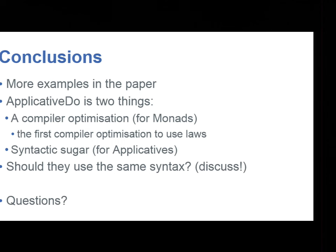So in conclusion, you can see more examples in the paper. There's one interesting question that comes up, which people often raise when I describe this. Applicative do is really two things. We've got some kind of syntactic sugar which applies to applicatives, but we've also got this interesting analysis that's trying to do something that looks like optimization on things that are applicative and monad. So it's both a compiler optimization and a syntactic sugar. And we're using the same syntax for both of those things. So there's a discussion to be had about whether they should be using the same syntax. And that's all I have. Thank you.